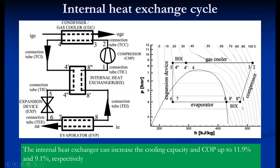If we put an internal heat exchanger between the cycle — similar to the liquid-vapor heat exchanger used in vapor compression cycles — the same type of heat exchanger used here increases COP by almost 10%. With the additional cost of only the heat exchanger, we can improve the COP by 5 to 10% when we use an internal heat exchanger.